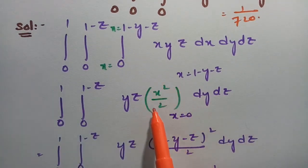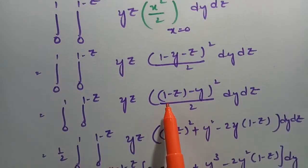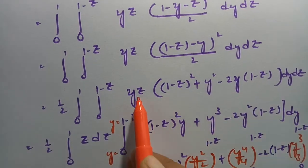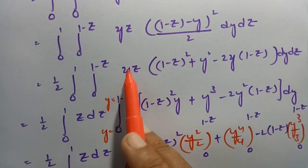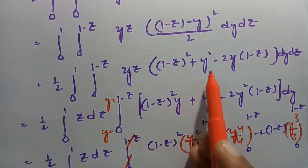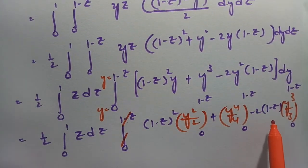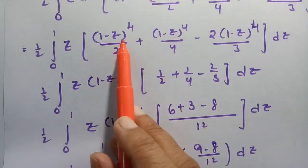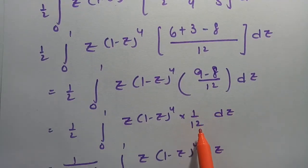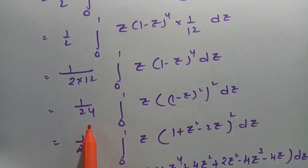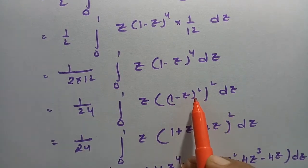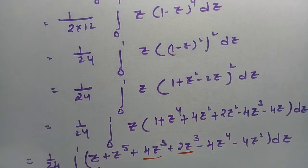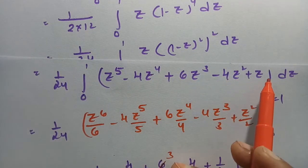To recap: the x limits are in terms of y and z, so we integrated with respect to x first. After substituting the x limit we wrote the result in the form (a minus b) squared, expanded as a squared plus b squared minus 2ab. Then keeping z aside and multiplying by y, we integrated with respect to y, substituted the y limits, took (1 minus z) to the power 4 common to get 1/12, giving 1/24 overall. Then (1 minus z) to the power 4 was expanded as a square of a square, expanded as (a + b minus c) squared, and each term multiplied by z.